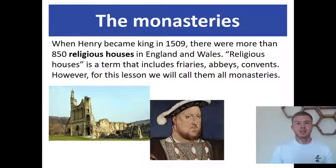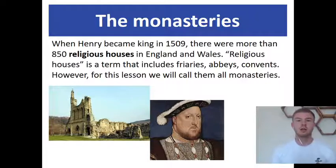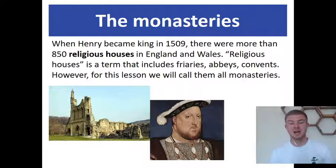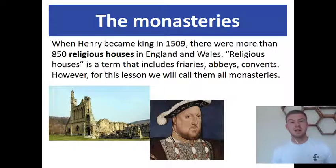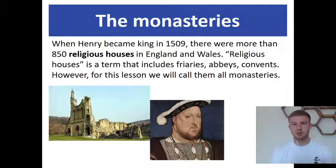This is Henry VIII on the left — don't get confused between the two of us, very different men with very different ideas. Henry became king in 1509. We've looked at what he did because he wanted a divorce and how he set up the Church of England in our last video — it's called the Reformation. When he becomes king, there were 850 religious houses in England and Wales. Religious houses includes monasteries, friaries, abbeys, and convents, but for this lesson we're going to call all of those monasteries.